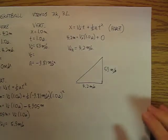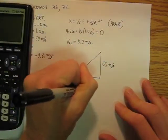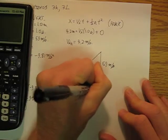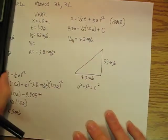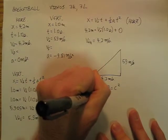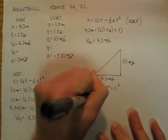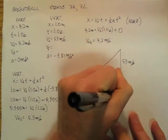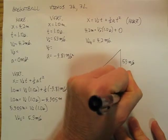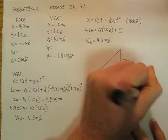And then we're going to do Pythagorean theorem. Let's see. Let's just jump right in there with that. So it's going to be 5.90 meters per second squared, plus 4.2 meters per second squared, equals c squared.